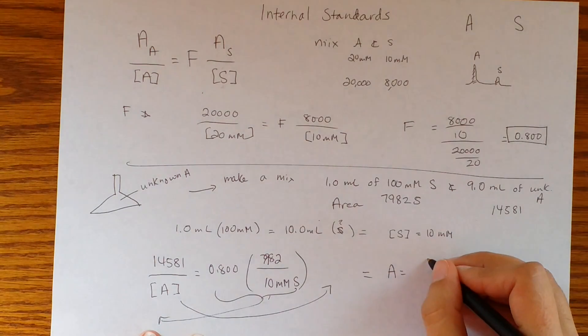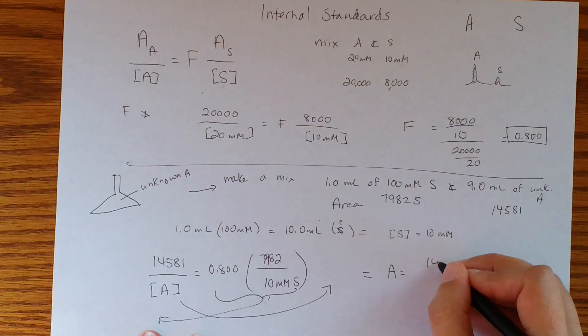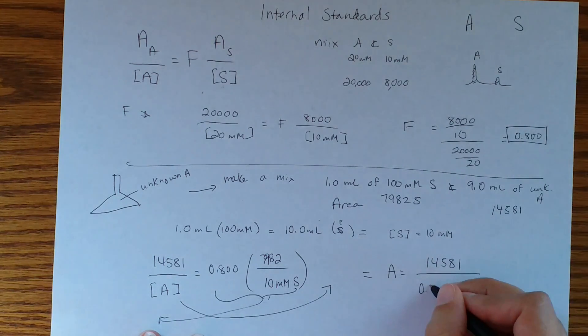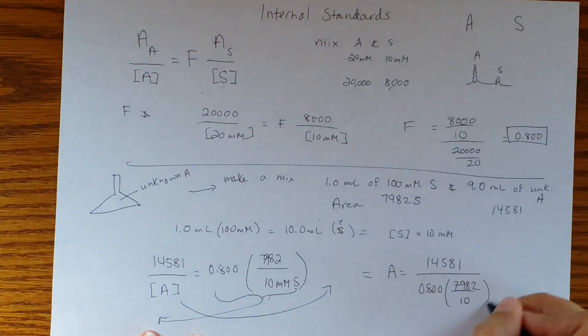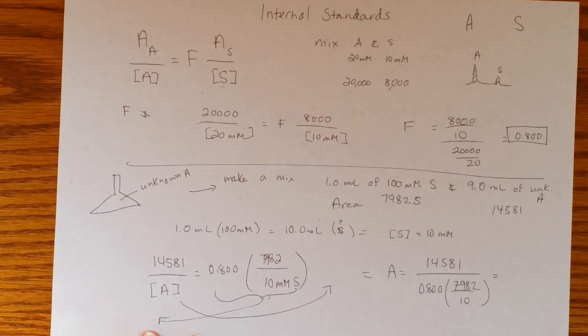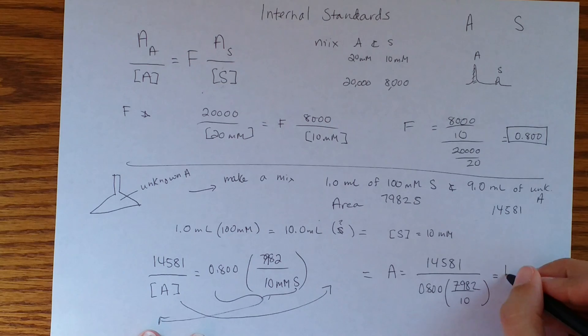A equals 14.581 over that big thing. So you can probably see where this is going, this is going to the calculator. I was all nice and I already plugged this in and I got out 14.61 millimolar.